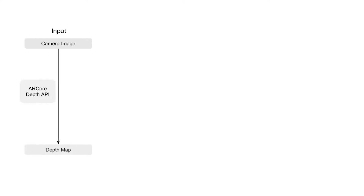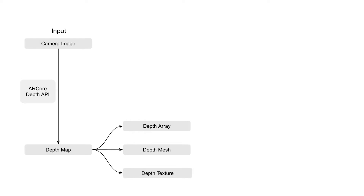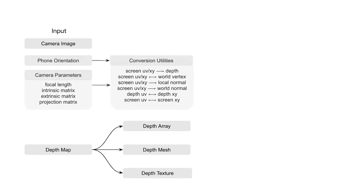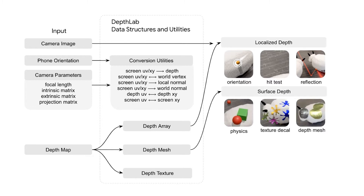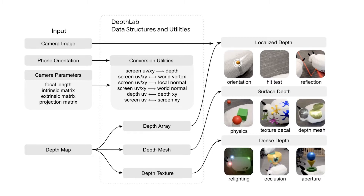For each camera image, we compute a raw depth map and generate the depth array, depth mesh, and depth texture data structures for different use cases. We offer a set of conversion utilities to improve a developer's workflow and switch between screen space and world space representations. Furthermore, we break down the taxonomy of depth usage into localized depth, surface depth, and dense depth-based applications, and describe our real-time algorithms for interaction and rendering tasks.